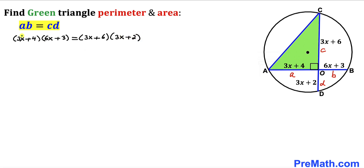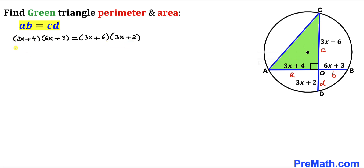Now let's multiply them out by double distribution on both sides. This gives us 18x² + 9x + 24x + 12 on the left, equal to 9x² + 6x + 18x + 12 on the right.